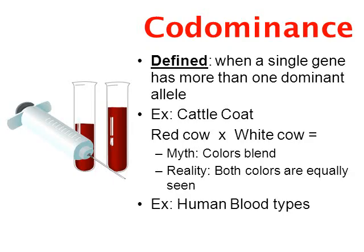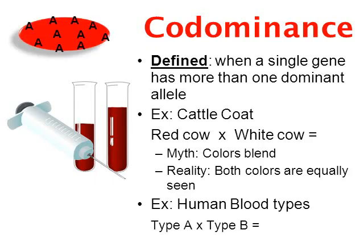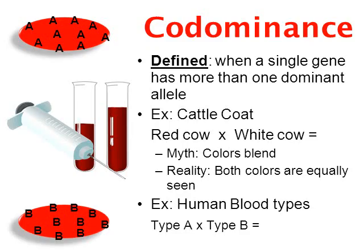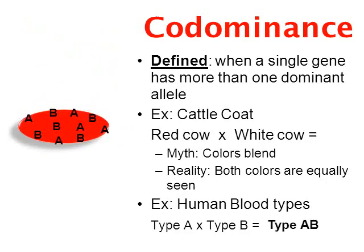A good example of codominance in humans is in blood types. A red blood cell with blood type A has certain proteins on its surface, and blood type B has different kinds of proteins on the surface. So what happens if mom is blood type A and dad is blood type B? The two blood types would be codominant — the child would have characteristics of both blood type A and blood type B.